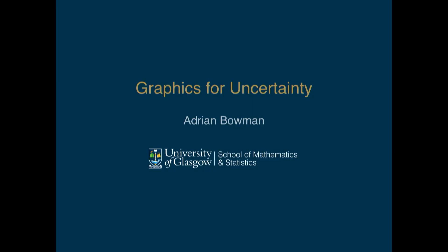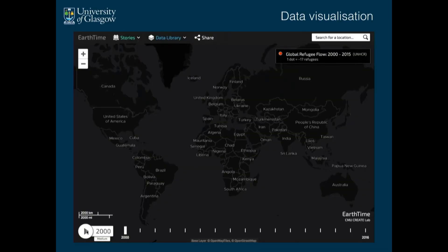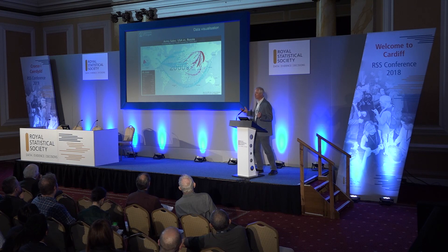A lot of them are really well done. My brother, who is not a statistician, sent me an email the other day saying, have you seen this? What a great way to present data this is, and he sent me the link. I had hoped to show you a different example, but one thing about graphics is you have to be ready to adapt to the lighting conditions in the room. I would rather have talked about refugee movement across the world, but what I'm going to talk about instead is arms sales across the world, because they're in much brighter colors.